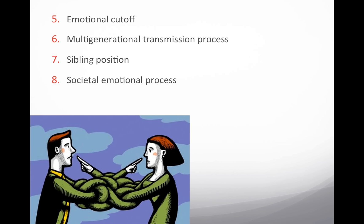The societal emotional process refers to the tendency of people to be more anxious and unstable at certain times. We are still affected by society — we don't operate in a bubble. There can be times like during overpopulation, war, epidemic, recession, or depression. Anything going on in greater society is also going to affect the emotional process of the family system.